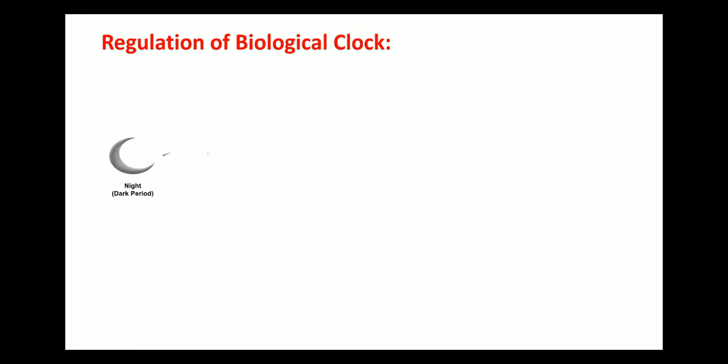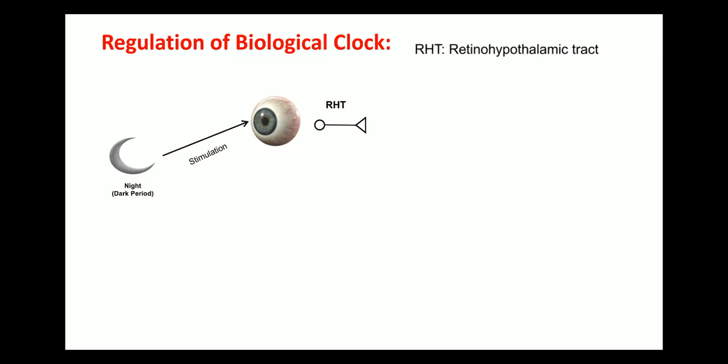Now we learn about the regulation of the biological clock. The light-dark cycle can stimulate the eye. When the eyes are closed, the clock begins. The retina sends impulses to the hypothalamus via the retinohypothalamic tract. The hypothalamus contains special cells known as the suprachiasmatic nucleus, which is involved in the regulation of the biological clock — meaning the hypothalamus of the brain is involved in the regulation of the circadian rhythm or biological clock.